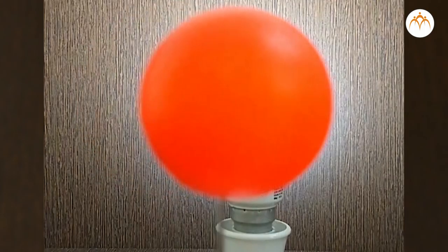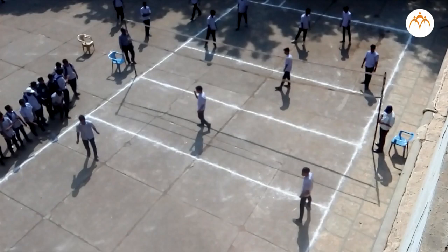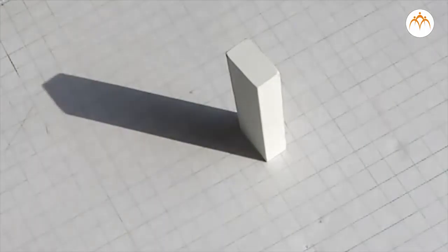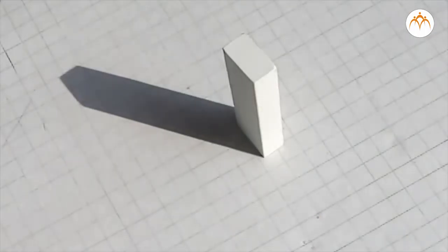This region is lighter as only some light from the bulb reaches there. It is called penumbra. Here you cannot see the light bulb at all. Ball is totally blocking the light source. This is the umbra region.